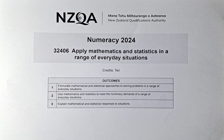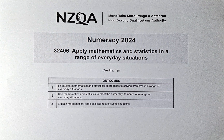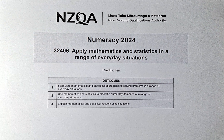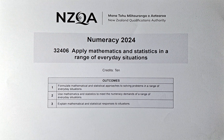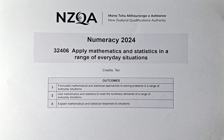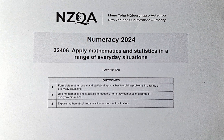Good day and welcome to video number 8 of the 2024 June Numeracy Exam Papers — Apply Maths and Stats in a Range of Everyday Situations. The paper number is 32406 and this is a unit standard, meaning you either get achieved or not achieved. To get your achieved, or 10 credits, you need to fulfil 3 outcomes: Outcome 1, 2 and 3. Without further ado, let's do question 4D, E and F in this paper.